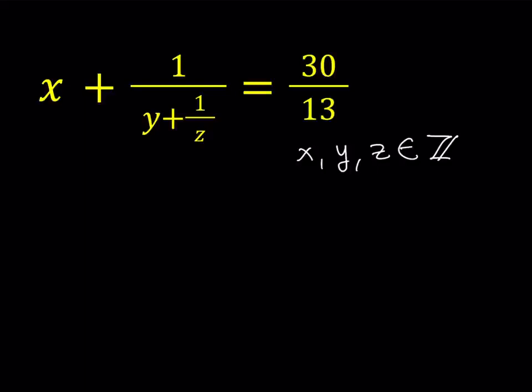So here's what I'd like to do. I'd like to take 30 over 13 and break it down. Notice that on the left hand side we have x plus 1 over something, so we have an integer plus 1 over something. Obviously 1 over something is going to be like a fraction. y plus 1 over z is also an integer plus a fraction, for example 5 plus 1 third or something like that. So we need to break down our number on the right hand side.